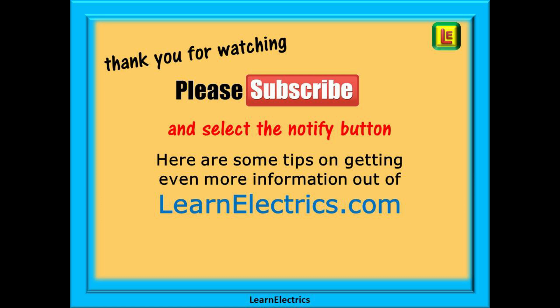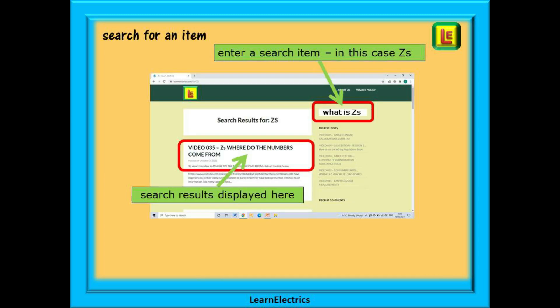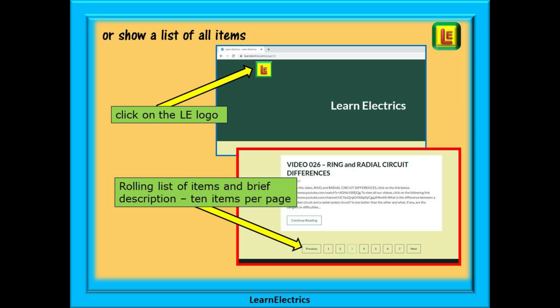Here are some tips on getting even more information and help out of LearnElectrics.com. At your web browser, enter LearnElectrics.com into the search bar. Select LearnElectrics.com from the choices offered and the website, as shown, will open up for you. You now have a couple of choices. You can search for a help item or any video by entering a keyword into the search bar on the right. Click on return and all the help files and videos with that word in the title will be listed for you. They will be shown with a short description and each video listed will have a link shown that will take you directly to that exact YouTube video.